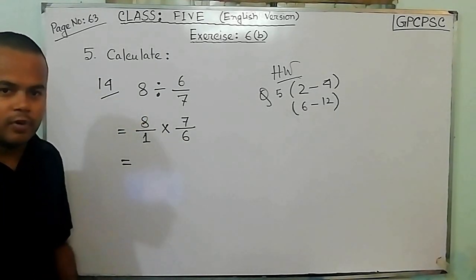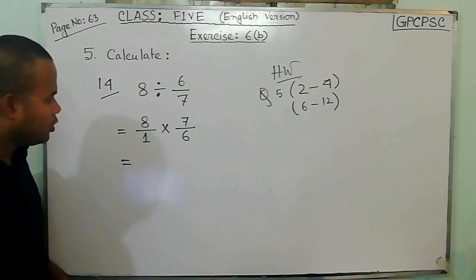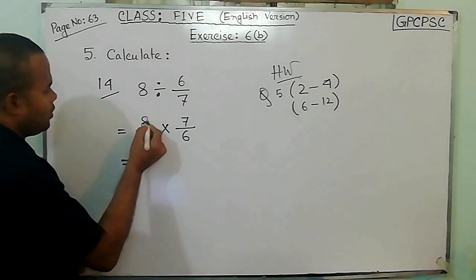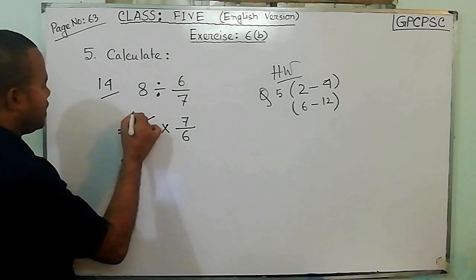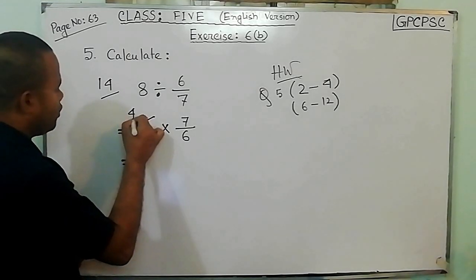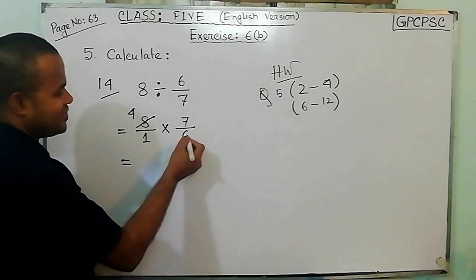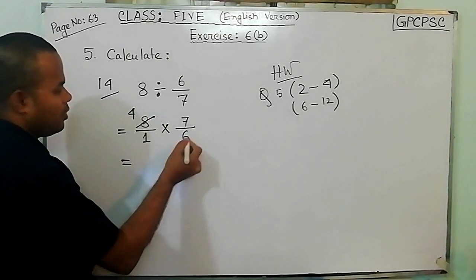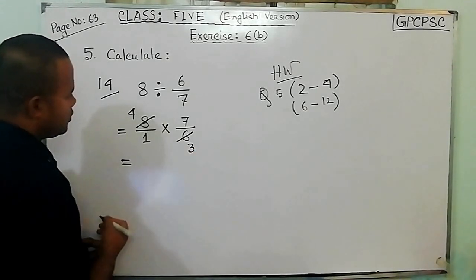That is 7 by 6. Now divide 8 and 6 — both numbers by 2. Then we have to divide 8 by 2, that is 4. And if we divide 6 by 2, then we have 3.